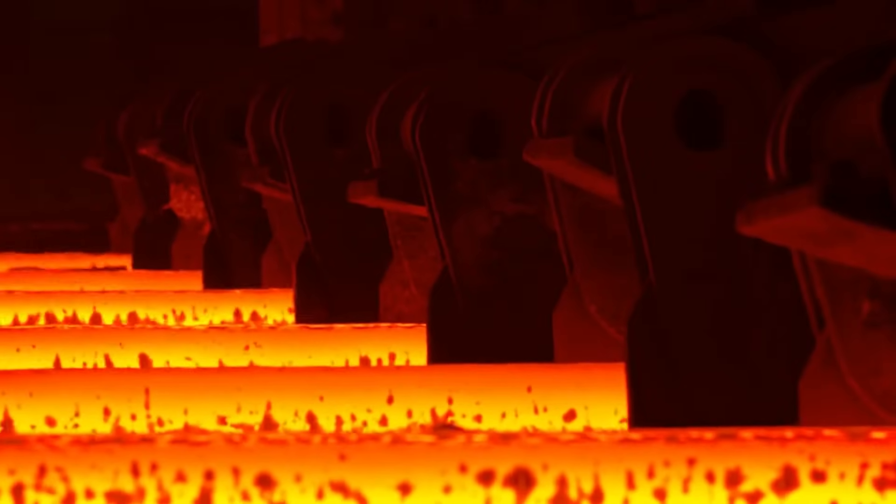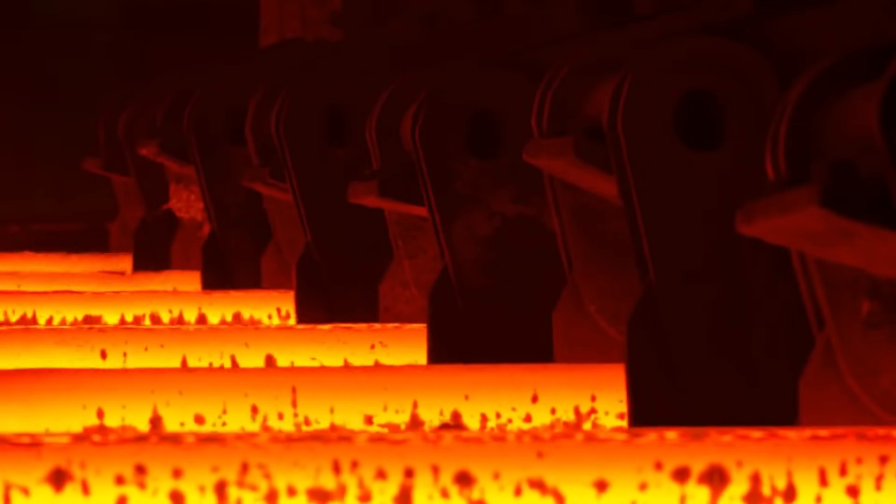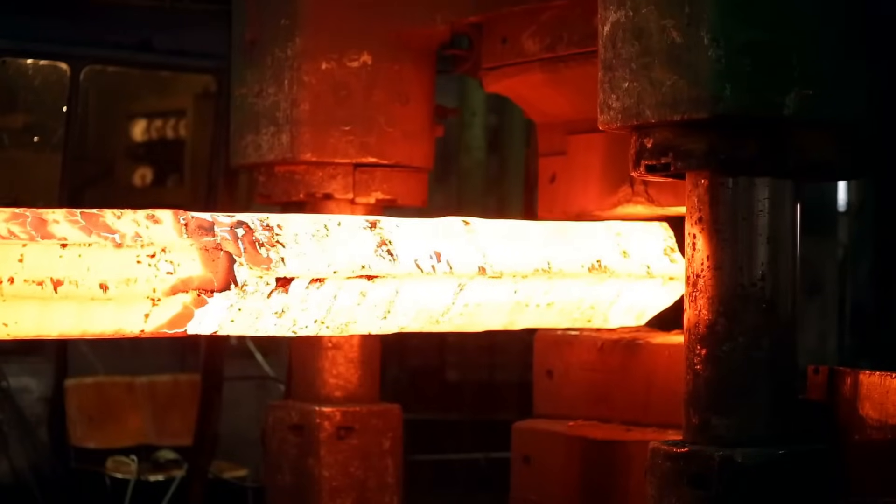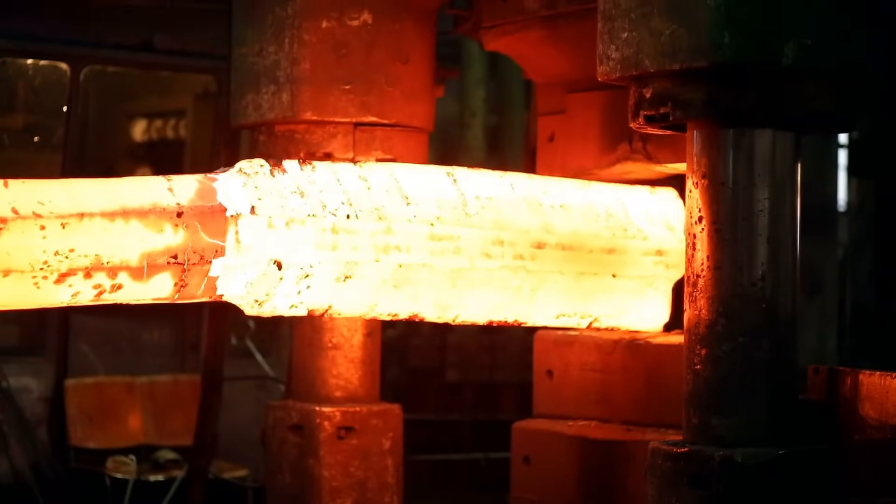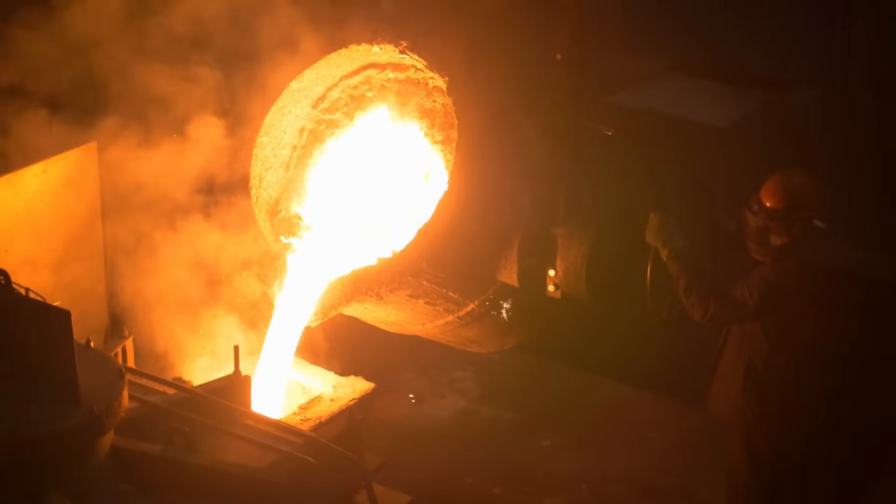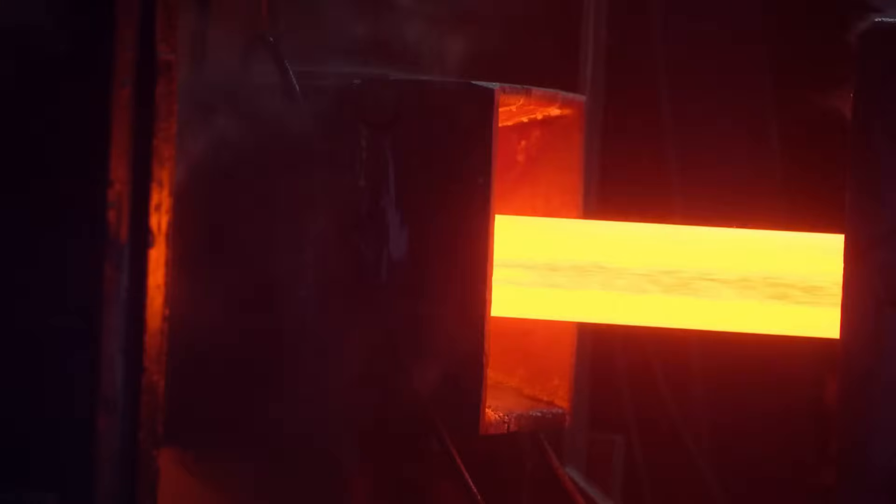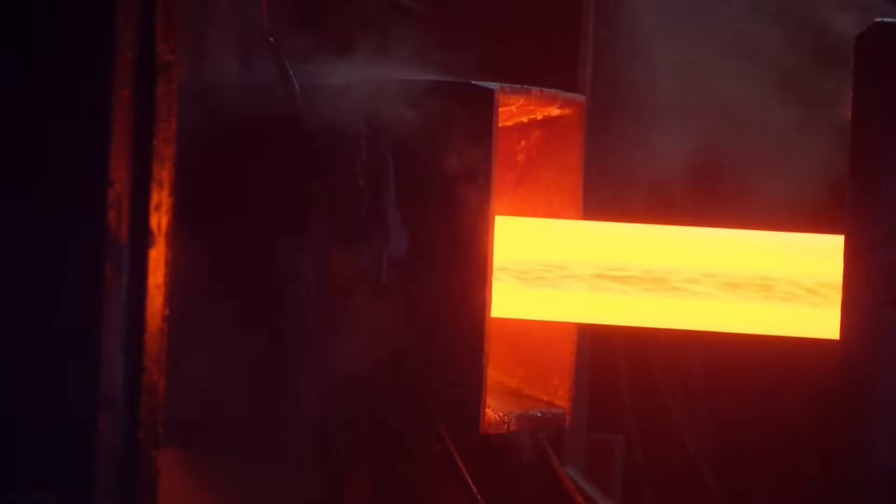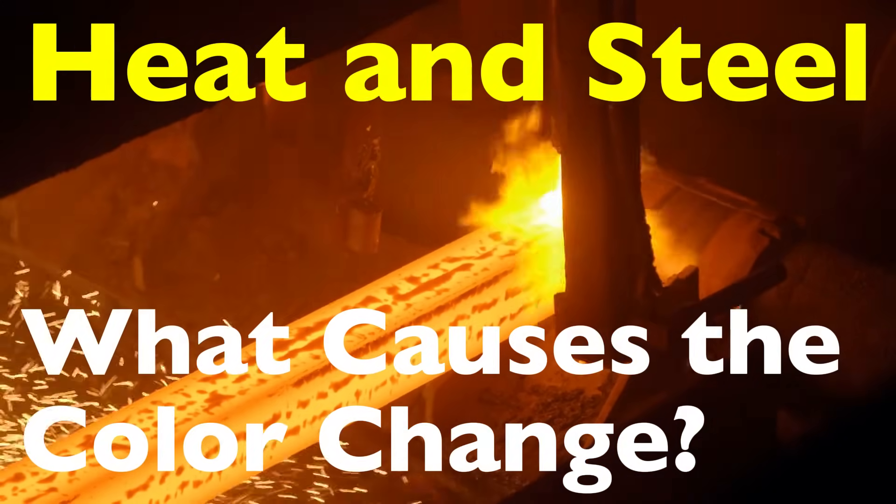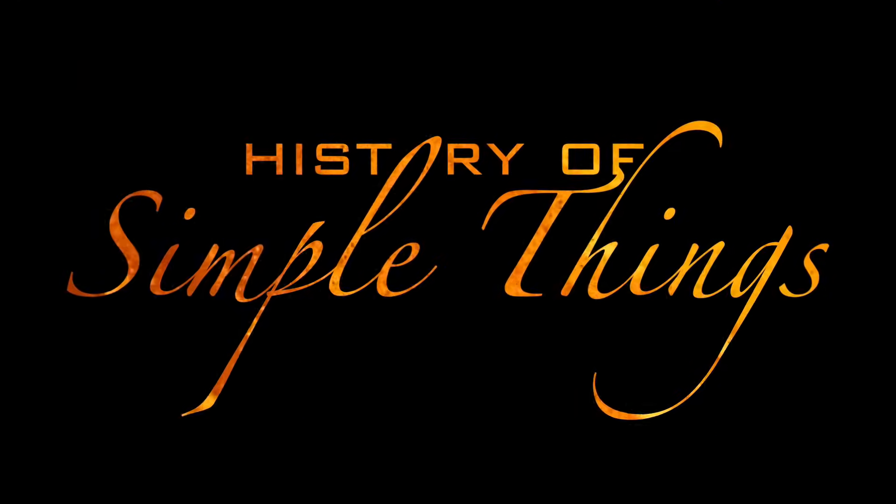Have you ever seen a blacksmith work a piece of glowing steel, maybe in a movie or one of those satisfying forging videos online? You'll notice the steel changing colors, glowing red, then orange, yellow, and even blue at times. But why does that happen? Is it just heat, or is there something deeper going on? Today we're diving into the fascinating world of metallurgy and physics to understand heat and steel, what causes the color change, and what those colors actually mean.